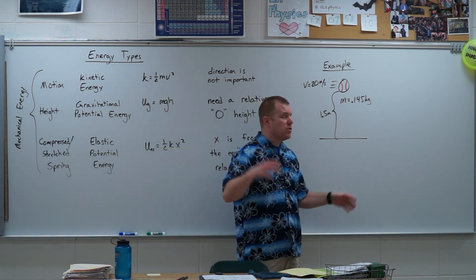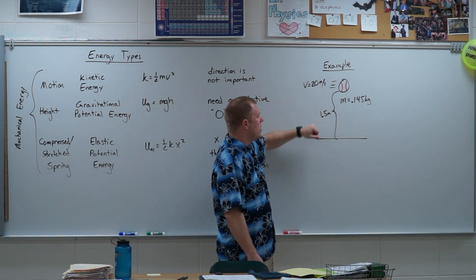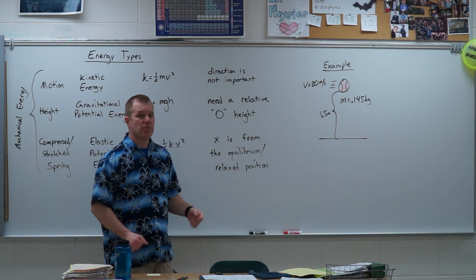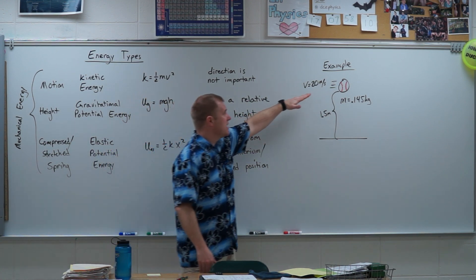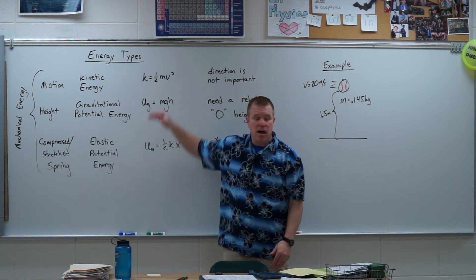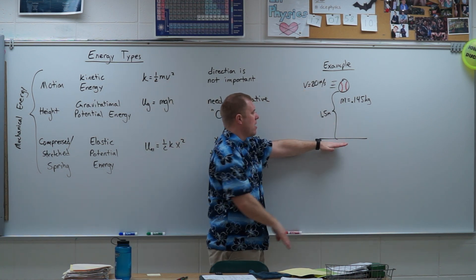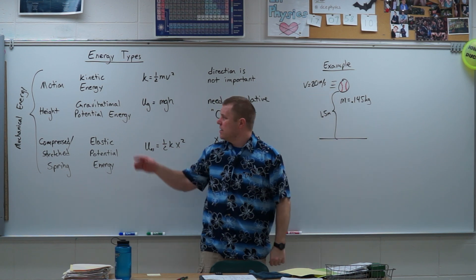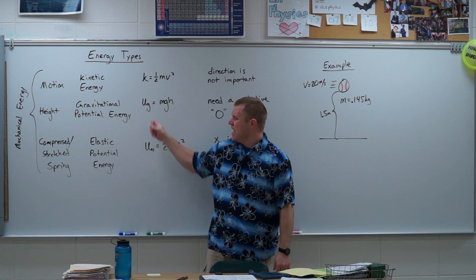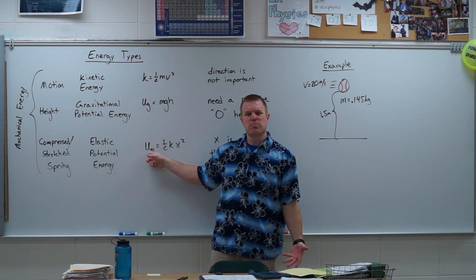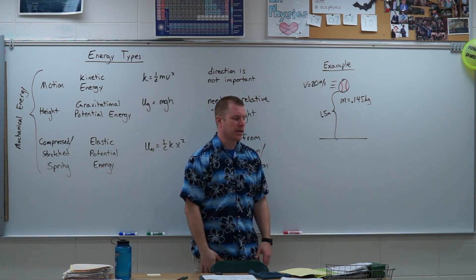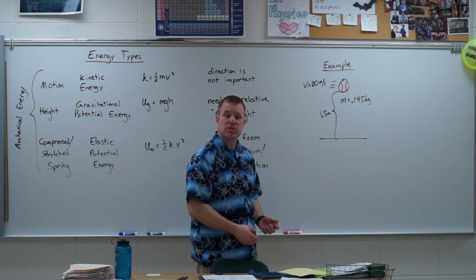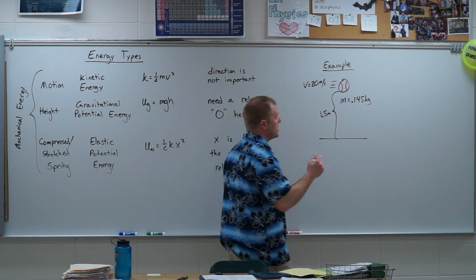I have a baseball flying through the air at 20 meters per second at 1.5 meters above the ground. What types of energy does it have? Well, it's in motion and it has a speed, so it has kinetic energy. It's at some height above the ground, so I would choose the ground as my height zero, and so it has gravitational potential energy. It's not stretching or compressing a spring, so it doesn't have elastic potential energy.